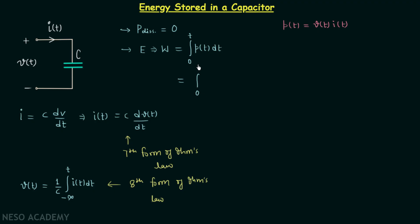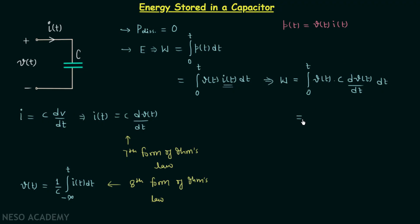So we have the integration from zero to t of v(t)·i(t) dt. We know that i(t) = C·dV(t)/dt, so in place of i(t) we write this. From here we get the work equal to the integration from zero to t of v(t)·C·dV(t)/dt times dt. Simplifying, we get the integration from zero to t of C·v(t) dv(t). Since C is a constant we take it out: C times the integration from zero to t of v(t) dv(t).